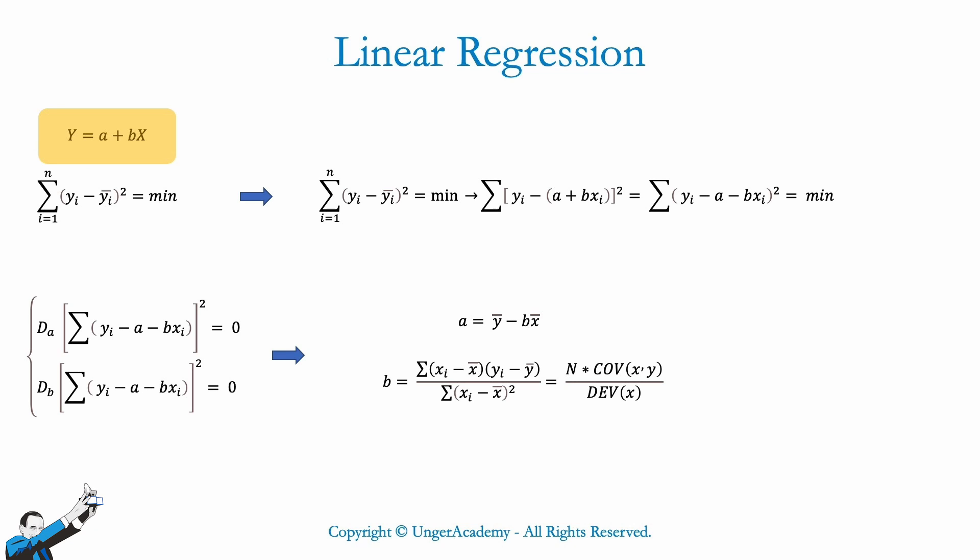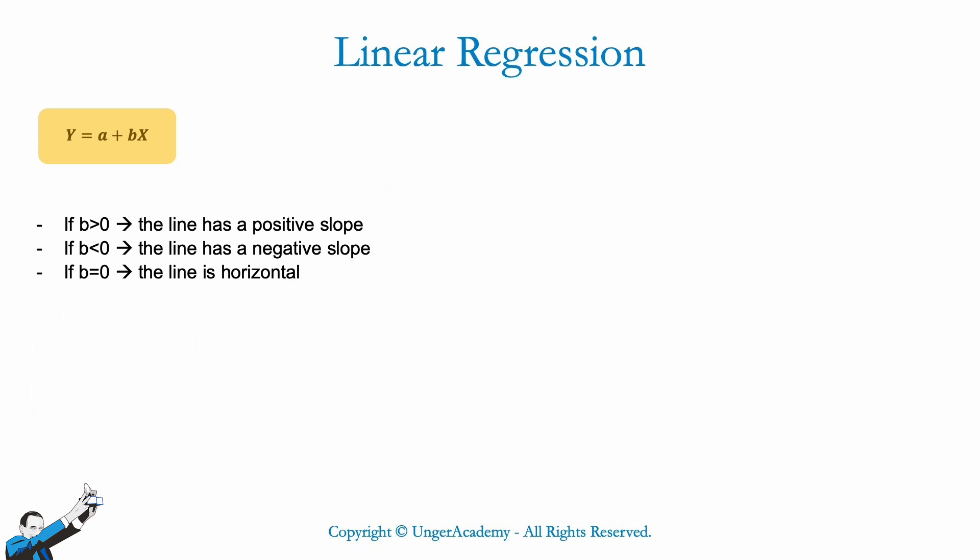We therefore see that the value of b, also called, if you remember, the regression coefficient, decides the slope of the line. As a matter of fact, if b is greater than 0, we'll have a line with a positive slope, as for example in this case.